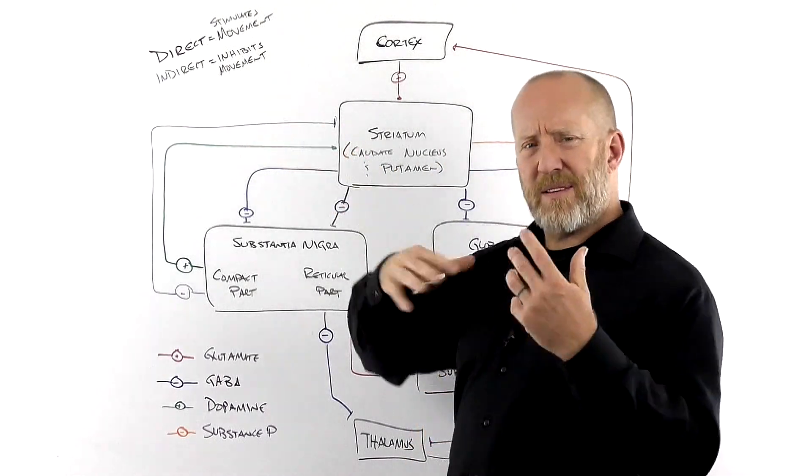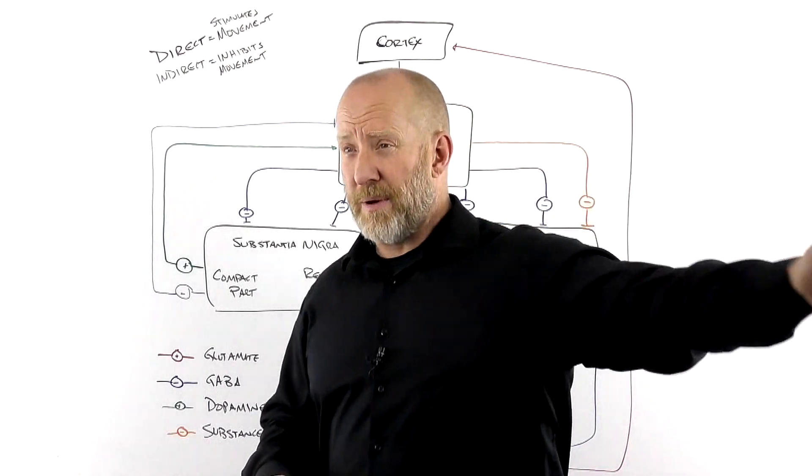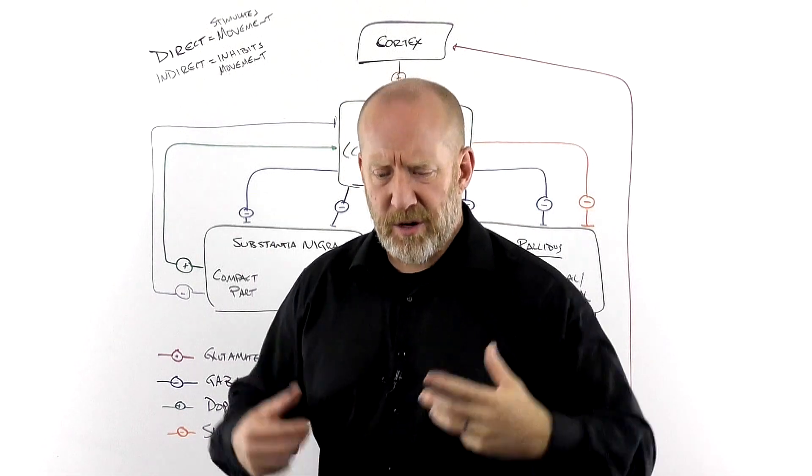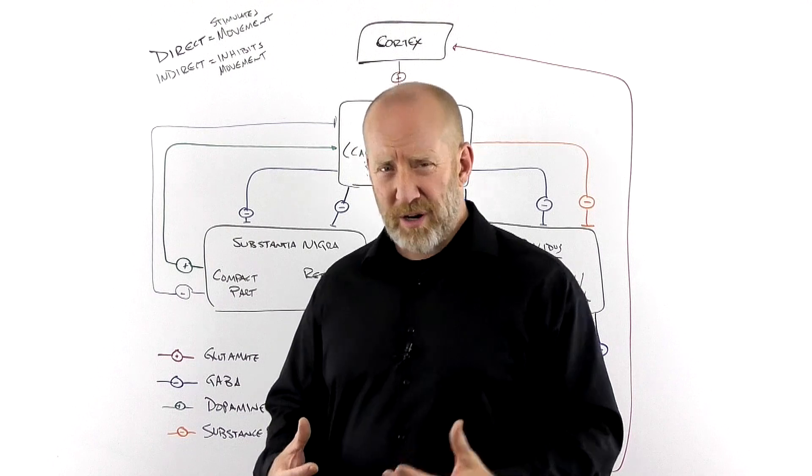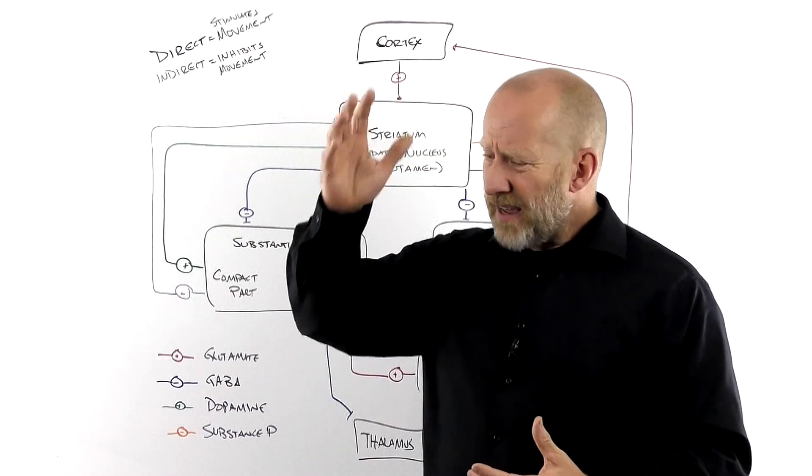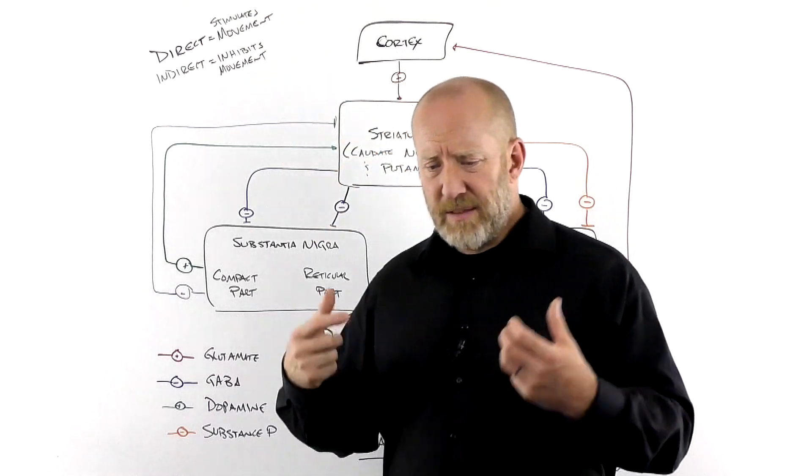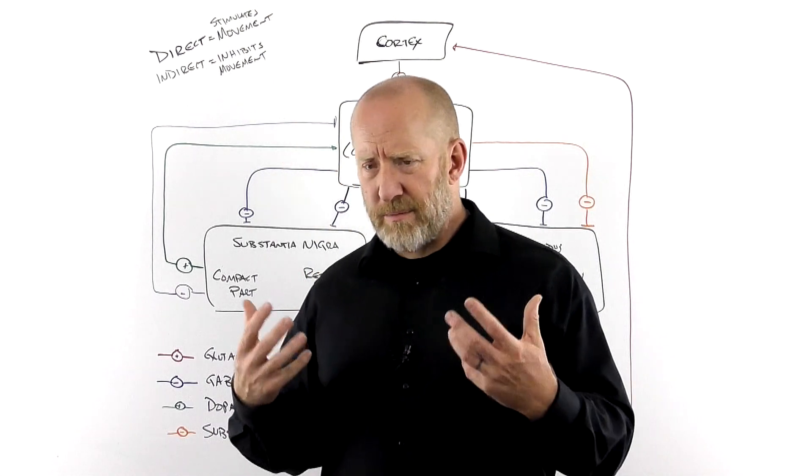Alright, so within the basal ganglia, let me just tell you one more thing. You're going to learn about the cerebellum in just a second. But movement basically occurs. Conscious, voluntary movement occurs. It starts in that pre-central gyrus of the frontal lobe, in front of that central sulcus, in the pre-motor area or the motor area.